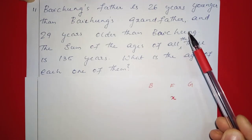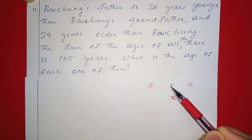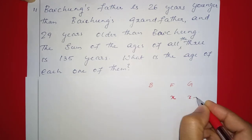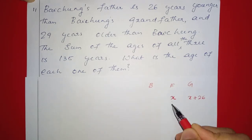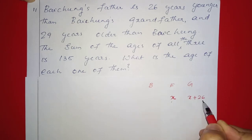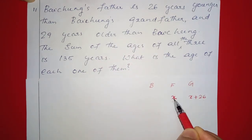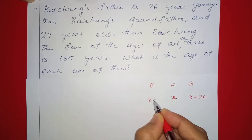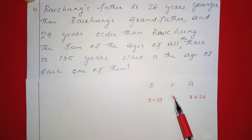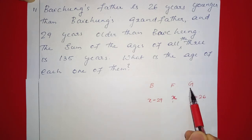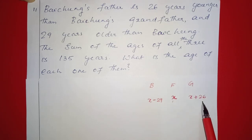Pejong's father is 26 years younger than Pejong's grandfather. So if we let the father's age be x, the grandfather's age is x plus 26. The father is 29 years older than Pejong, so Pejong's age is x minus 29.